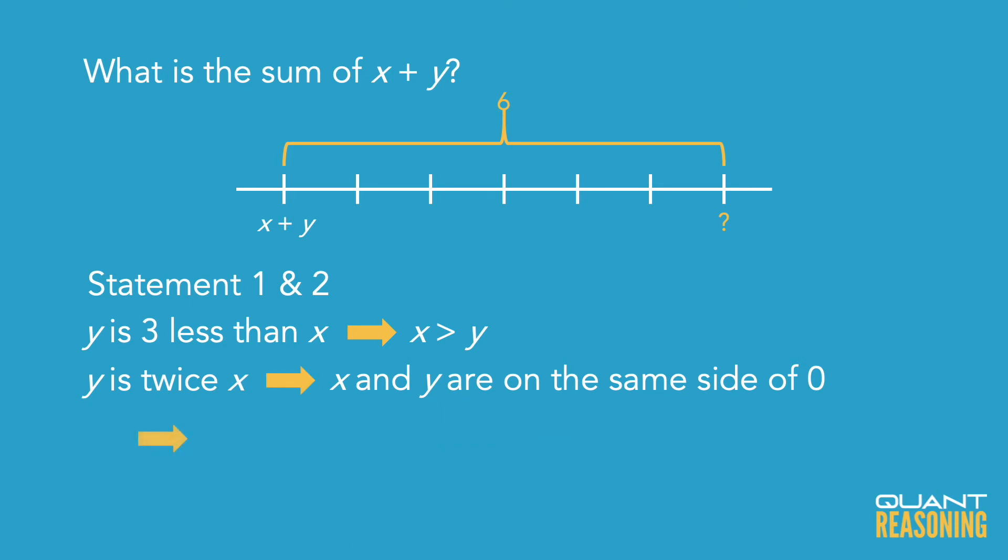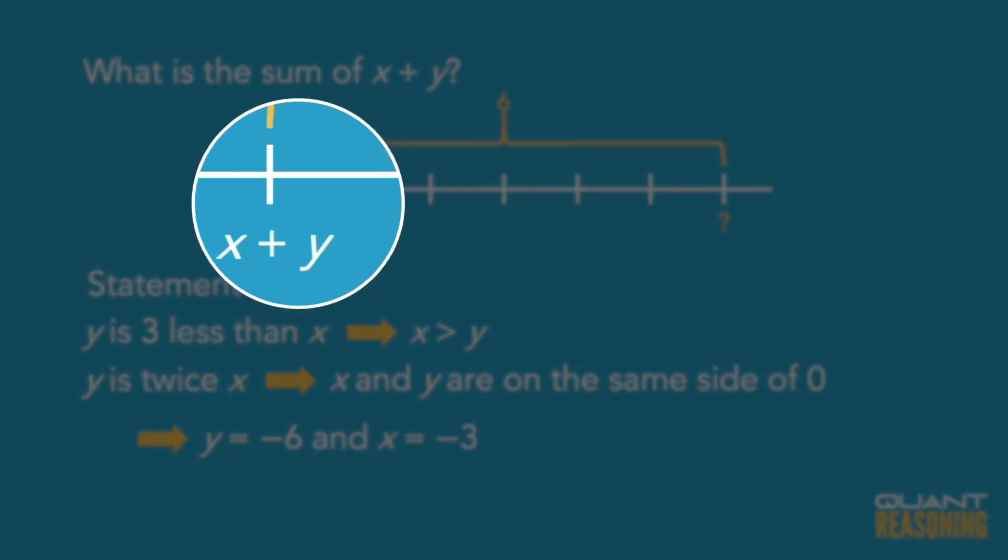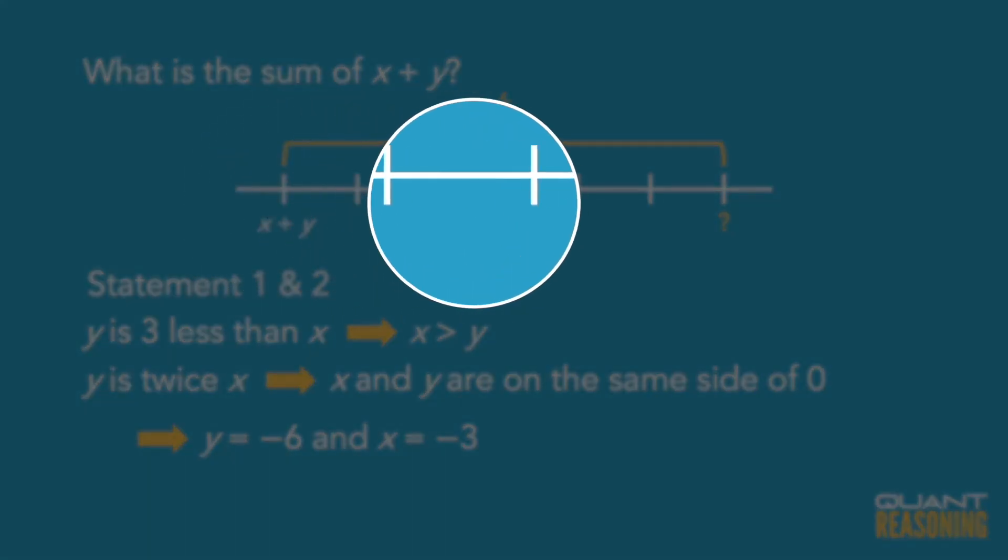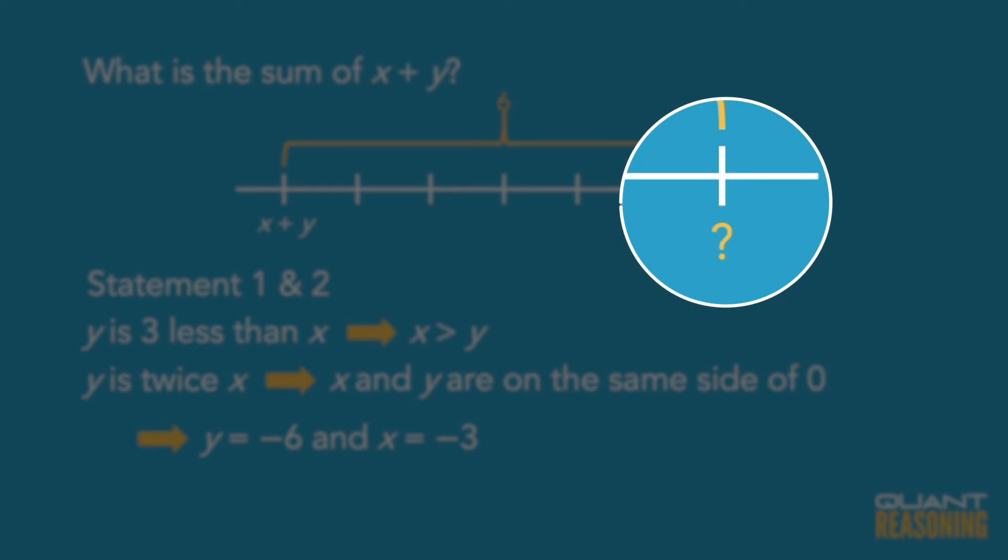In this case, specifically, they'd be negative 6 and negative 3, and so their sum would be negative 9, and so the thing that the question is asking about, which is 6 units to the right of that, would be negative 3.